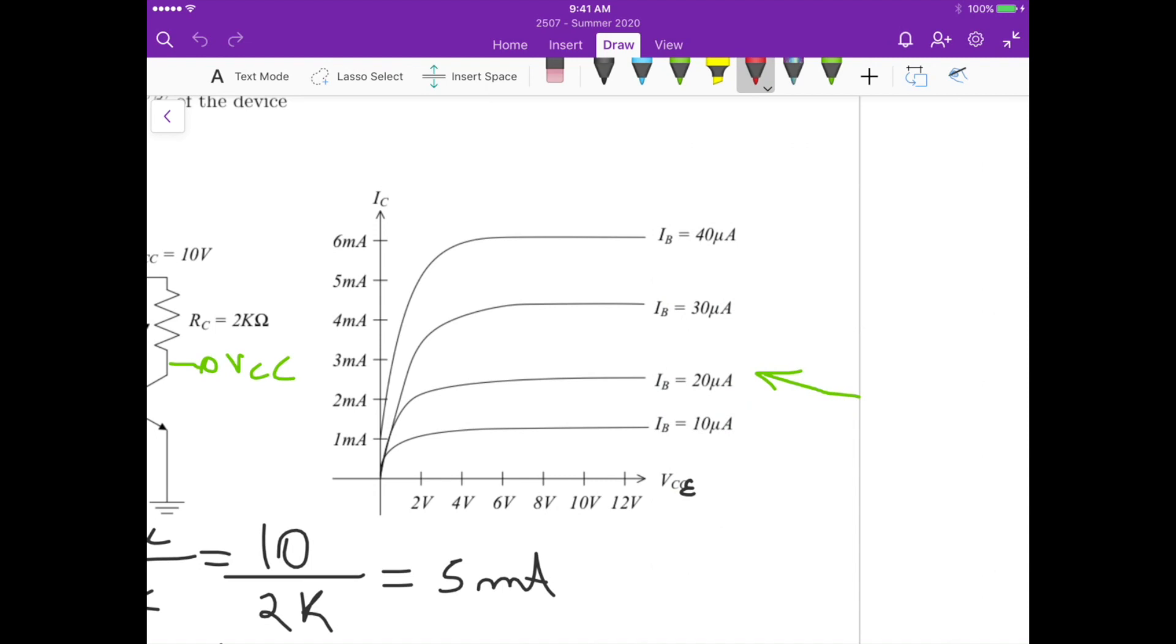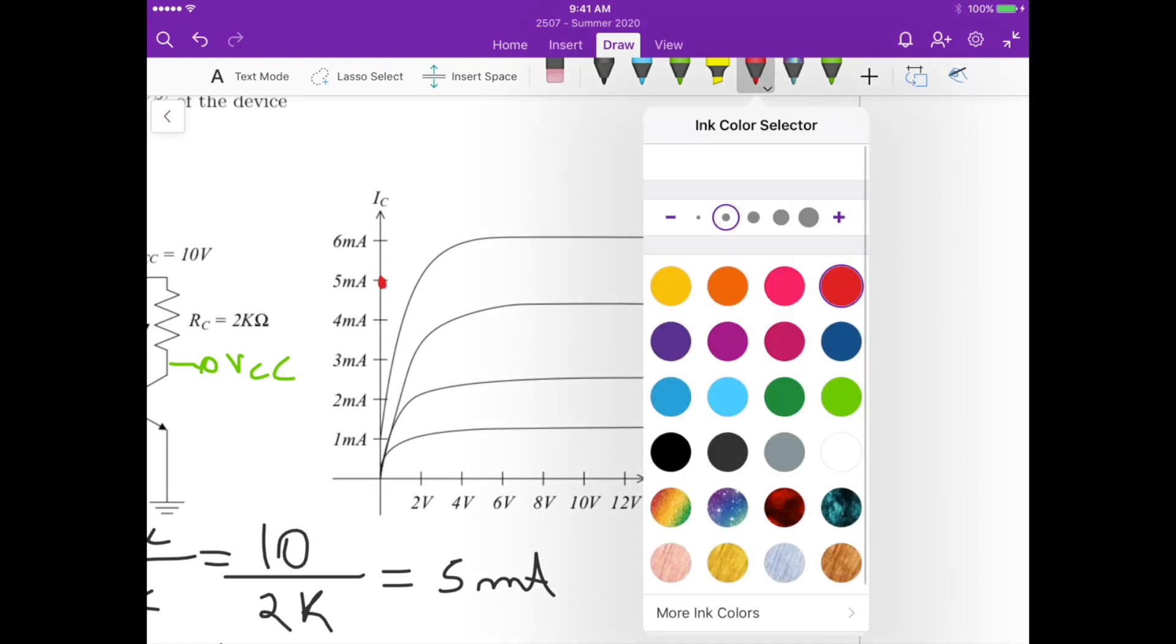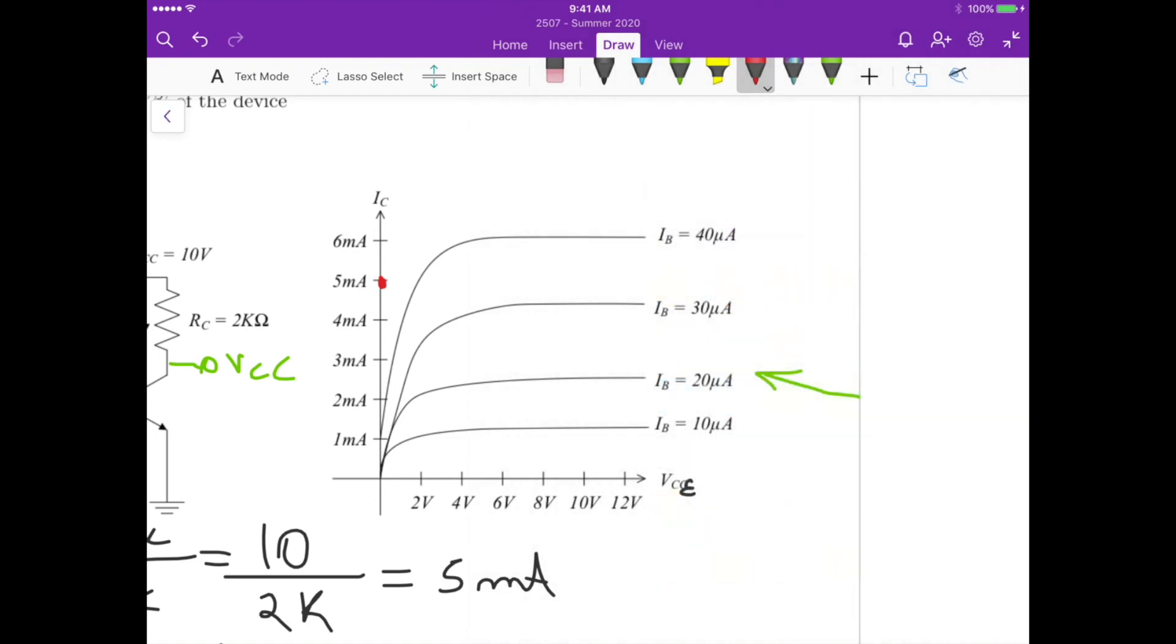We know that we have 5 milliamperes for IC max, and we also have 10 volts for VCE max, so it's this one here. Now if we trace a line that connects those two points, that's the load line.